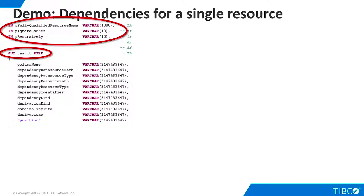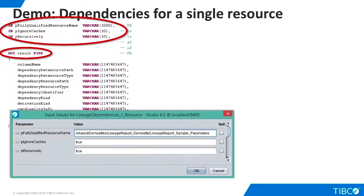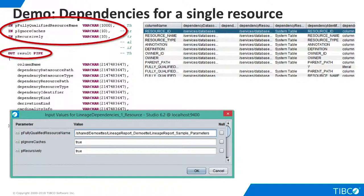Note that the TDV dependencies procedure only analyzes views. It does not accept requests to analyze folders, SQL scripts, or other resource types. At runtime, we enter the parameters for a single resource and execute our script. The script returns a result set with one row for each column in the resource we specified.